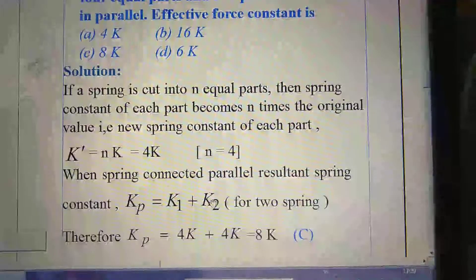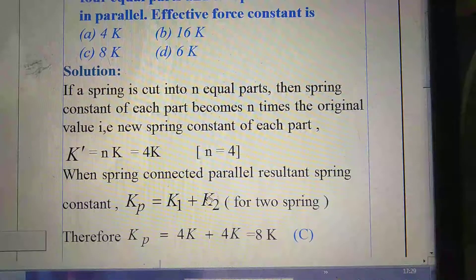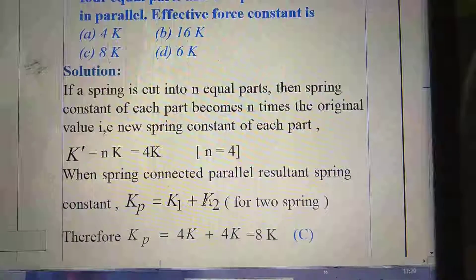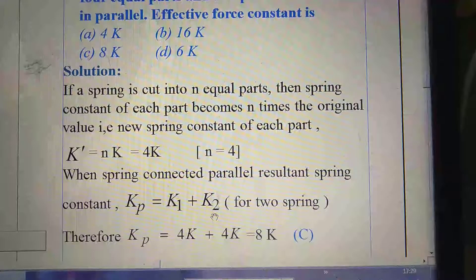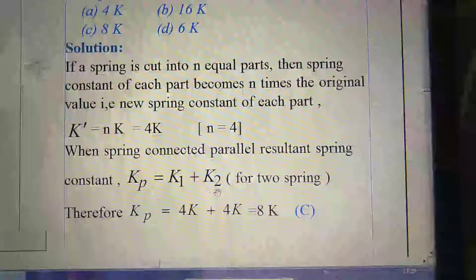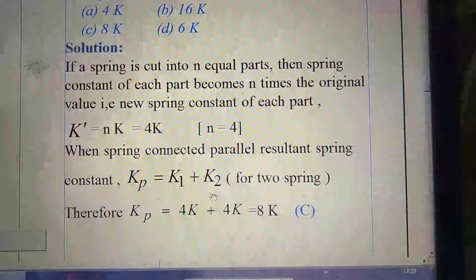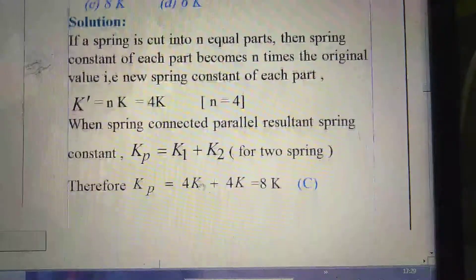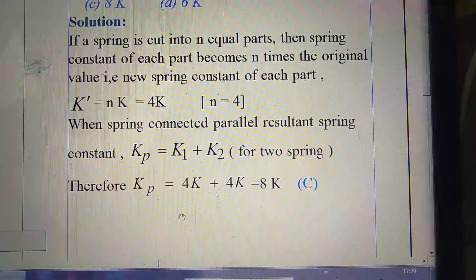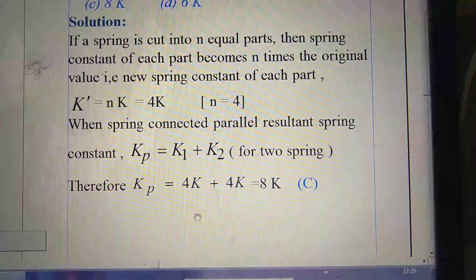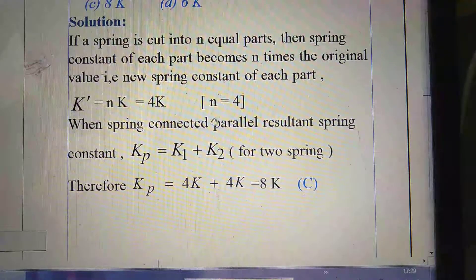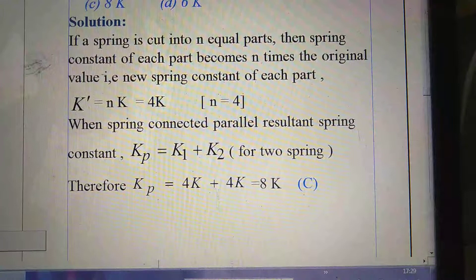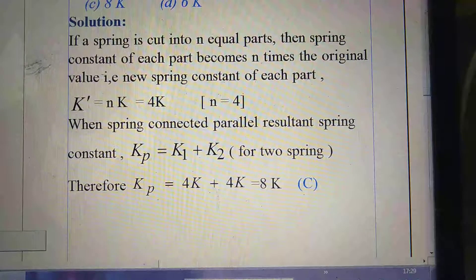Again, we know the formula of resultant spring constant whenever two springs connected in parallel. That is Kₚ = K₁ + K₂. Here, K₁ is 4K and K₂ is also 4K. So after insert and we calculate, we got as 8K. So right option is C.